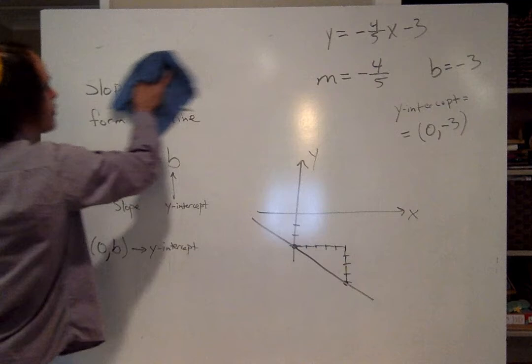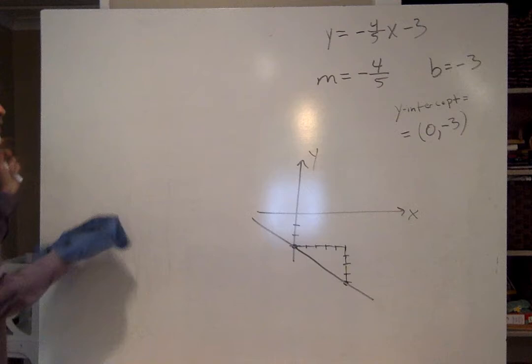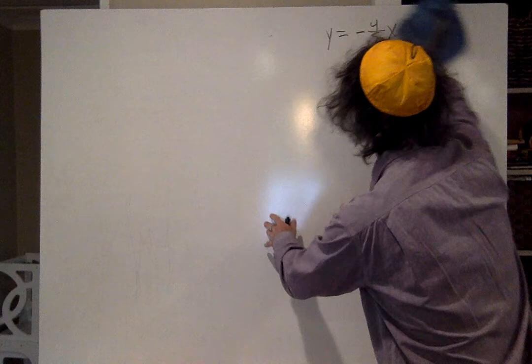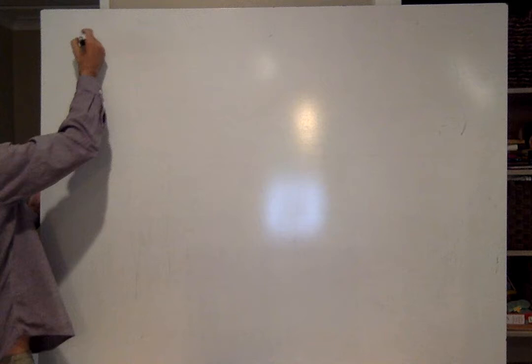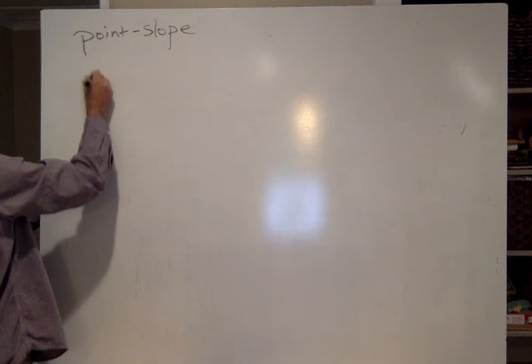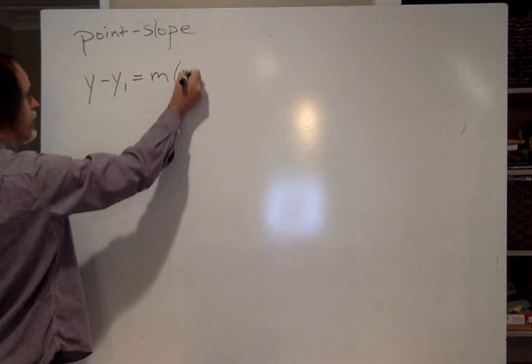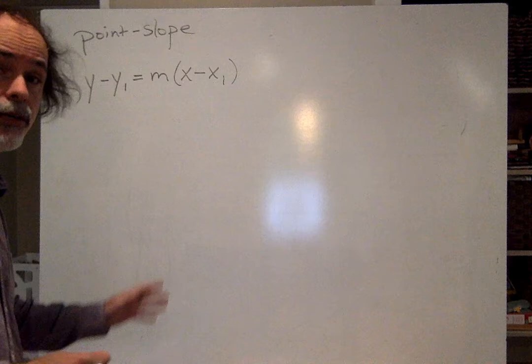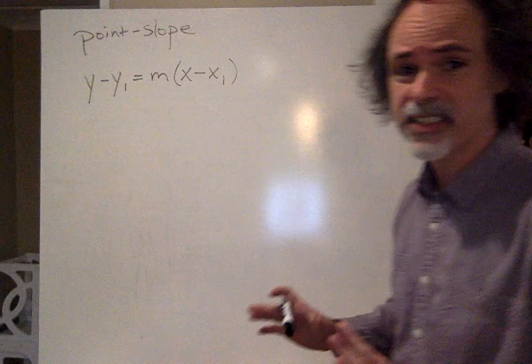The other form of a line they want you to know is because many times you're not given just the y-intercept. You're given a slope but just some arbitrary point. So you're just given a slope and you're given a point. So they call this the point-slope equation for a line. and this one is y minus y1 equals m times x minus x1. Yeesh! Looks complicated and it can be. Not nearly as easy as the slope-intercept form but sometimes you don't have, you know, the choice if you're just given a point.